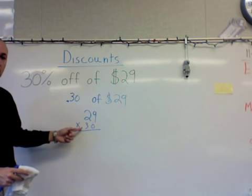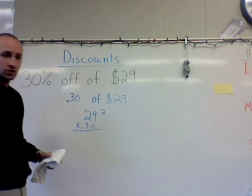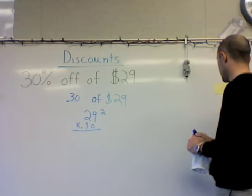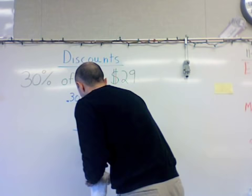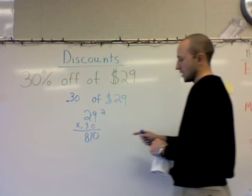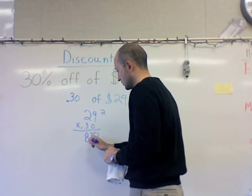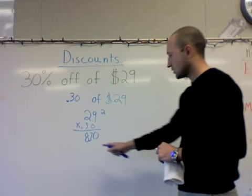Now we know it's going to be a lot easier to do 29 times 30. So we can take our decimal out and just remember that it has to go back into our final answer two places. So now we're just going to do 29 times 30. If I do that problem I should get 870, but my decimal has to go in two places — one, two. So now it looks like $8.70.